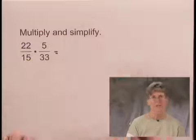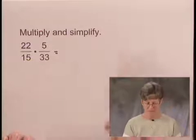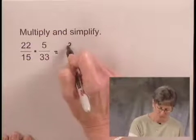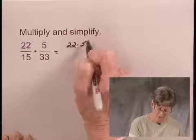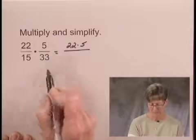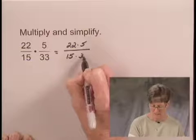When we multiply fractions, we multiply the numerators and we multiply the denominators. So in the numerator, I'd have the product 22 times 5. And in the denominator, I'm going to multiply 15 and 33.